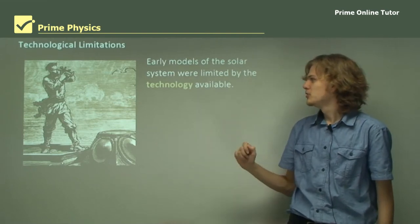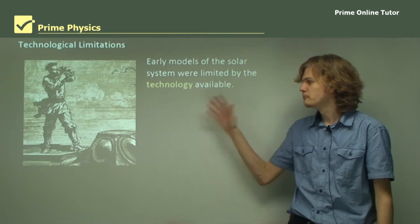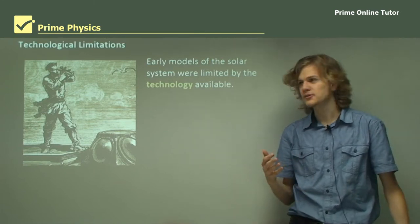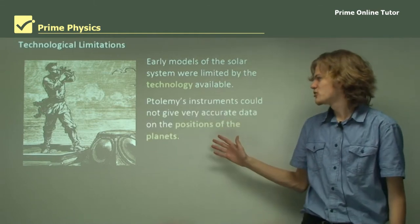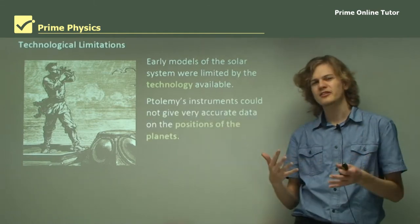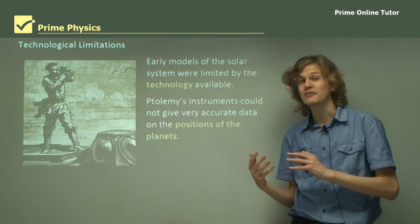Early models of the solar system were limited by the technology available. So we have a picture here of an early navigator at sea using a sextant to examine the skies. Ptolemy's instruments could not really measure things very accurately compared to what we have now.